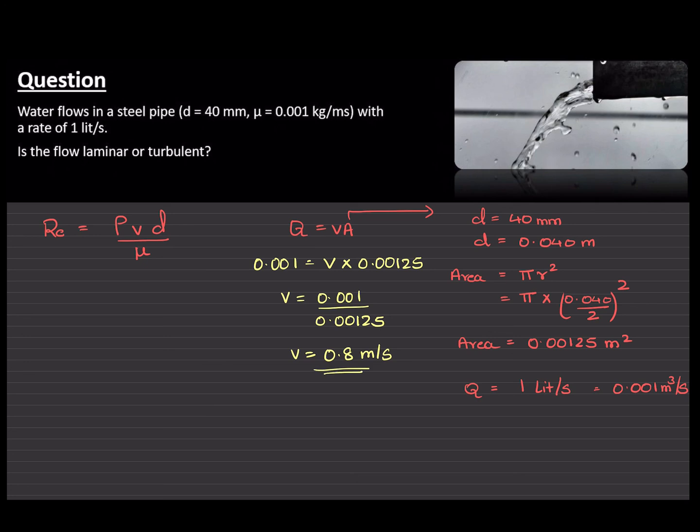Now, we know the velocity at which the fluid is traveling. Next, we can substitute this value for velocity into the equation to find the Reynolds number. Okay, so we can write Re equals density of water is 1000 times the velocity which is 0.8 times the diameter of the pipe. Again, we got to write that in meters. So, that's going to be 0.04.